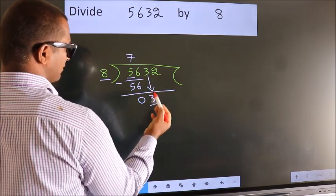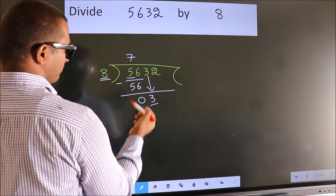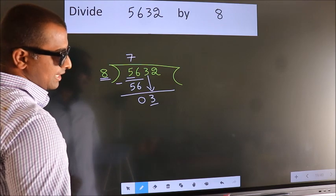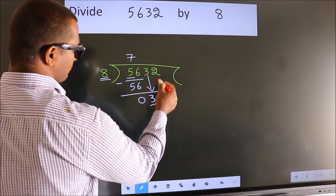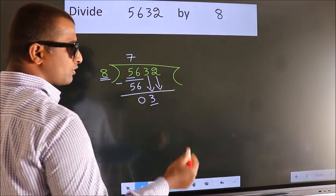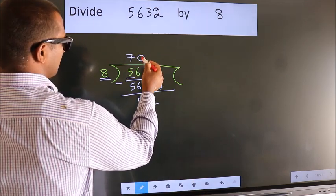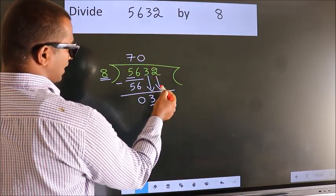Here we have 3, here 8. 3 is smaller than 8, so we should bring down the second number. And the rule to bring down the second number is put 0 here. Then only we can bring down this number.